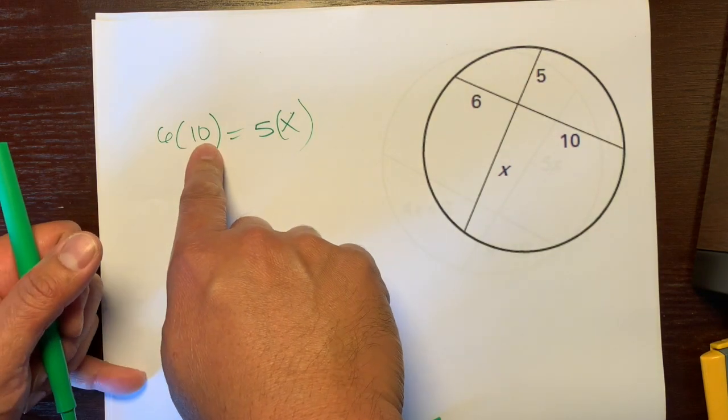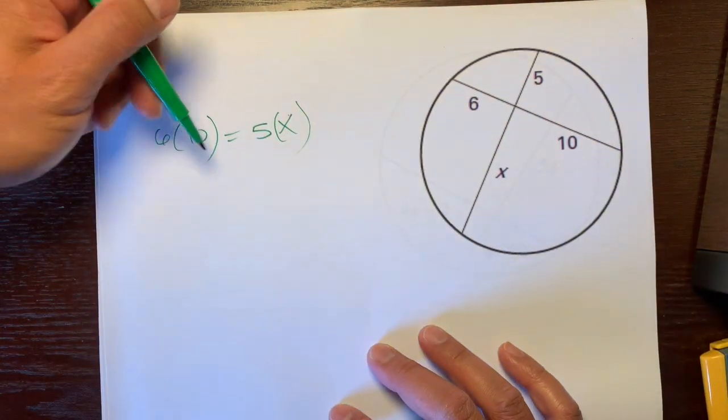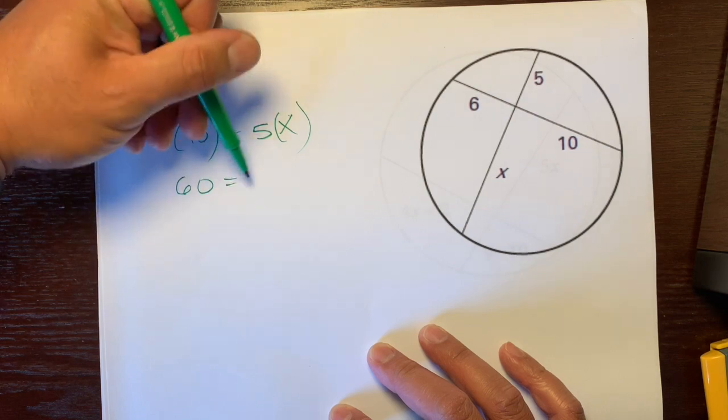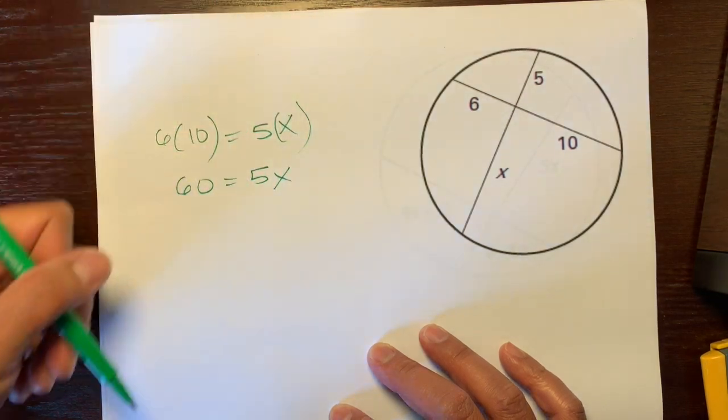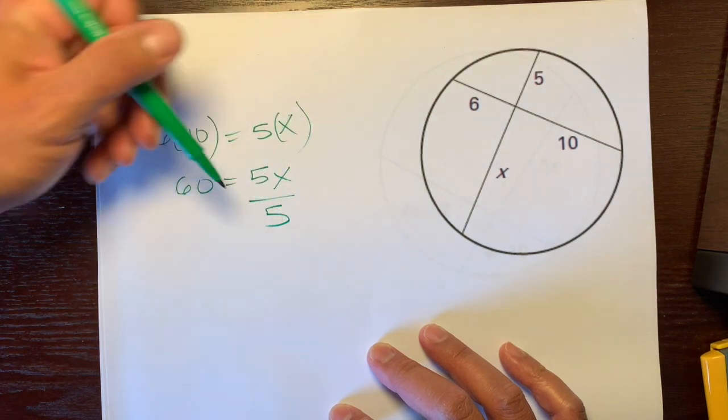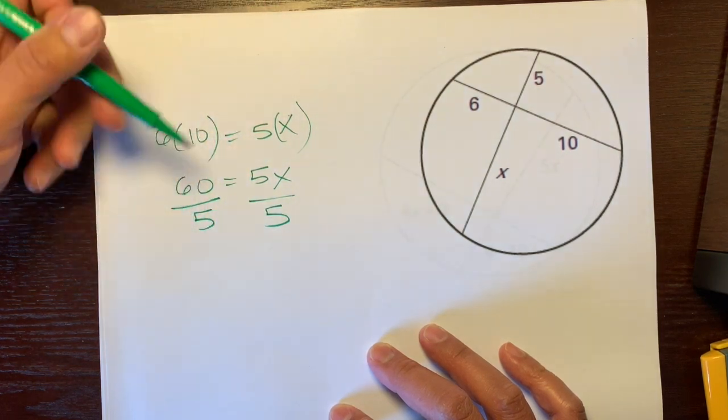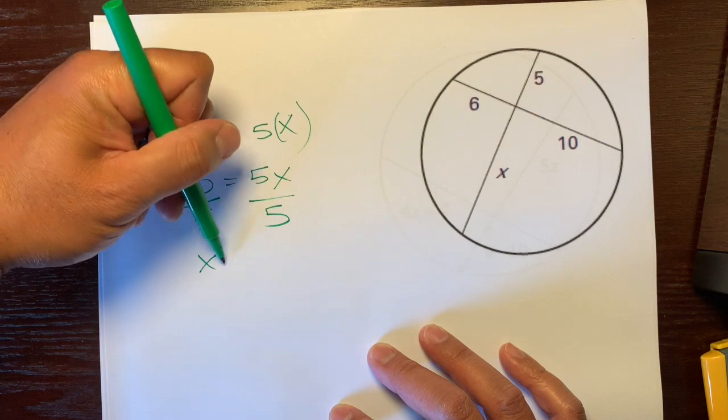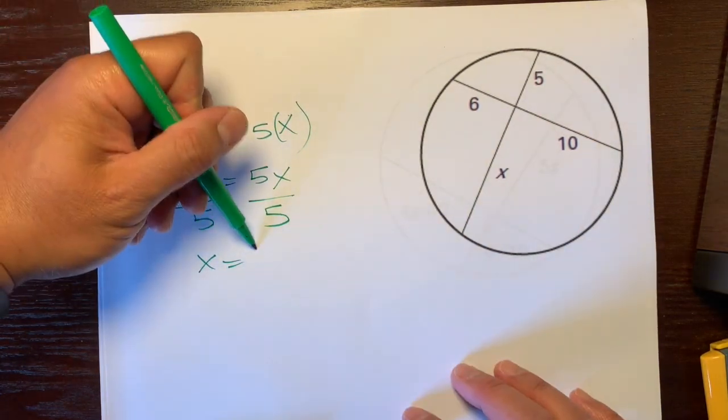You could have written 10 times 6, it doesn't matter. Either way you'll get the same answer. Six times 10 is 60, is equal to five times x. The last step: divide by five on both sides.